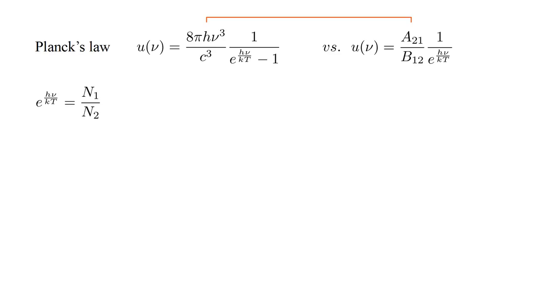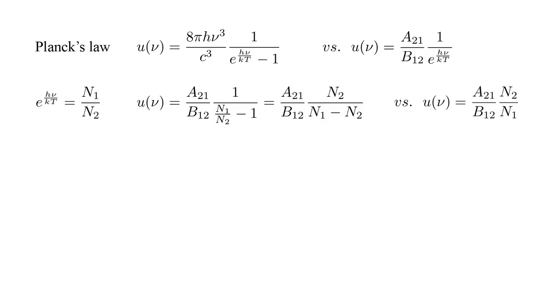We replace e to the h nu over kT by N-one over N-two. We also identify the leading factor in Planck's law with A-two-one over B-one-two. After multiplying numerator and denominator by N-two, we obtain A-two-one over B-one-two times N-two over N-one minus N-two. This has an extra N-two term relative to our previous analysis, implying that there is some additional emission process that we've overlooked.